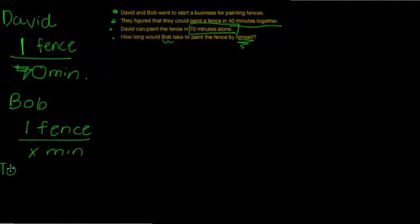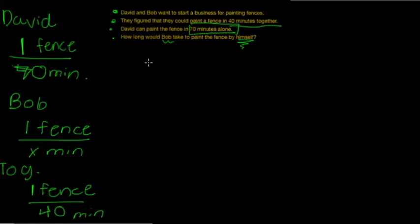Together, both David and Bob can complete one fence, or 100% of the work, within 40 minutes. Now, let's set up an equation to solve how long it took Bob to paint the fence. First, let's put in David's.